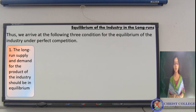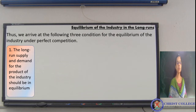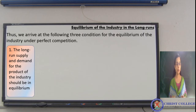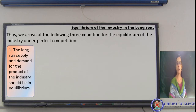The first condition is supply-demand equality. The long-run supply and demand should be in equilibrium — that is, the quantity demanded and quantity supplied of the product should be equal.